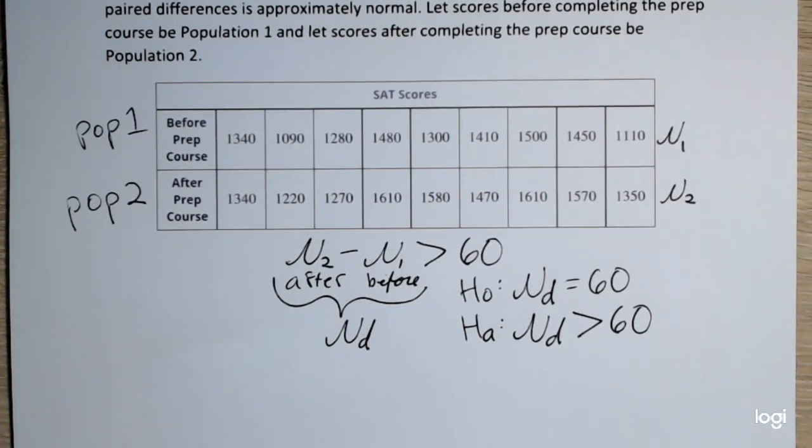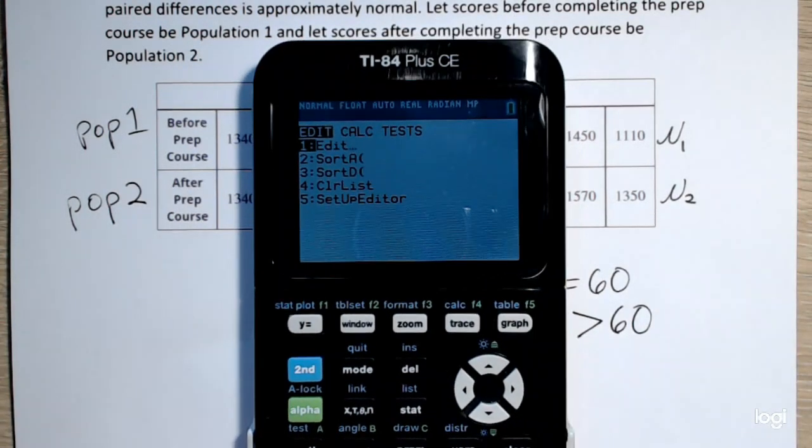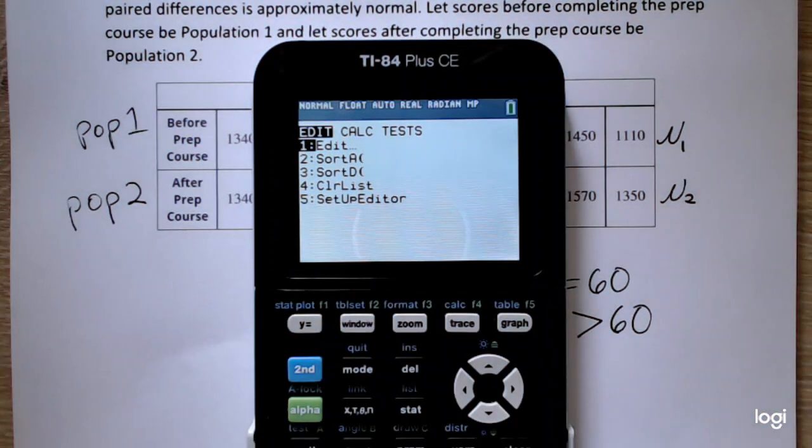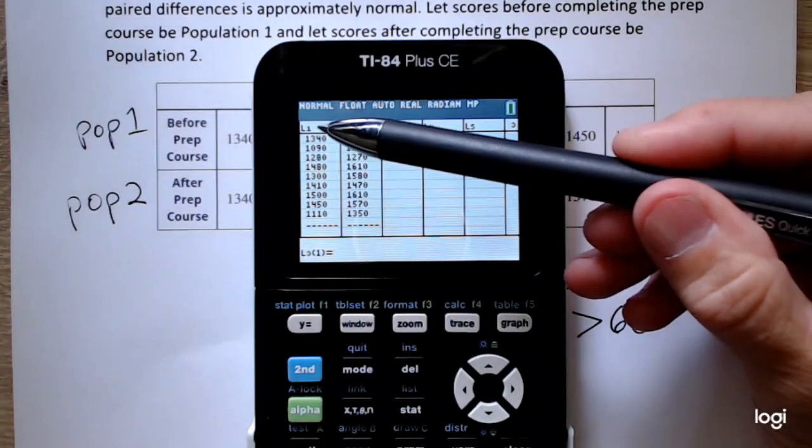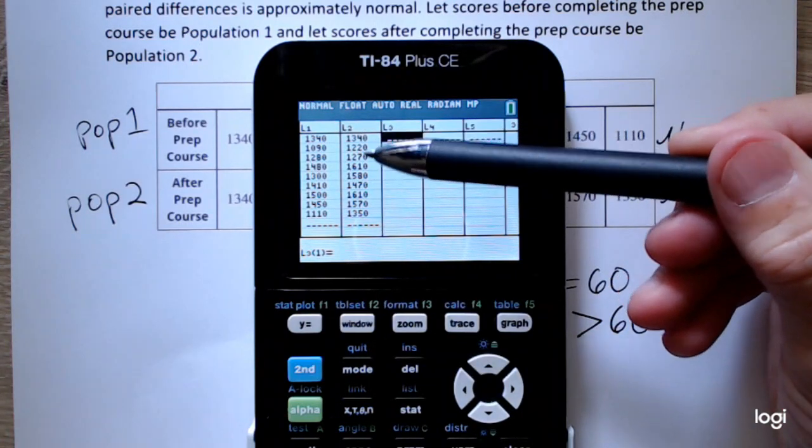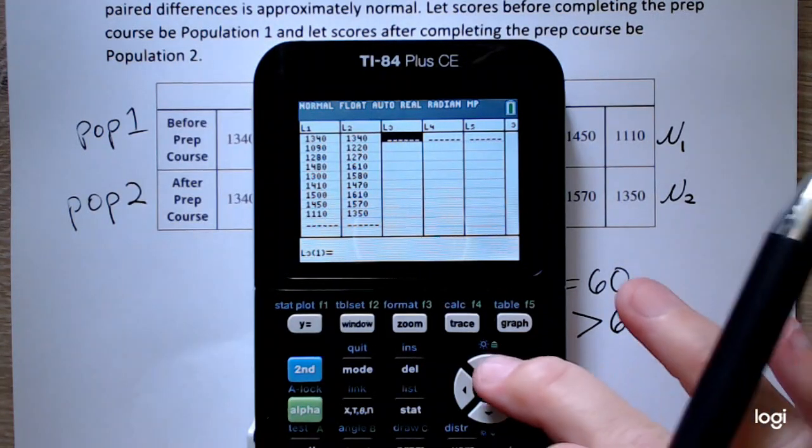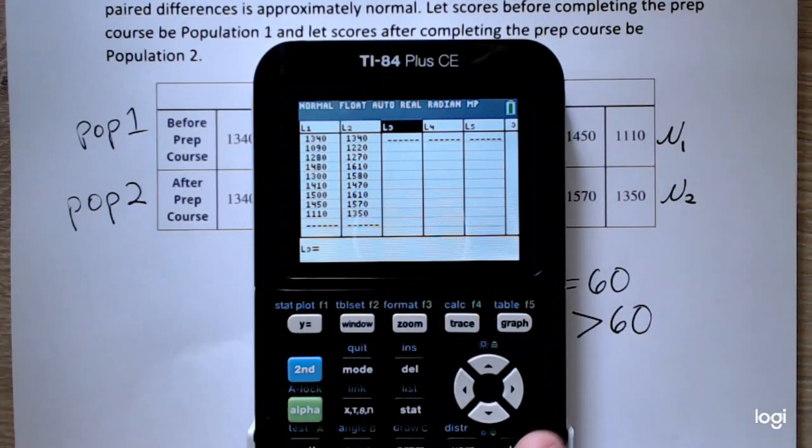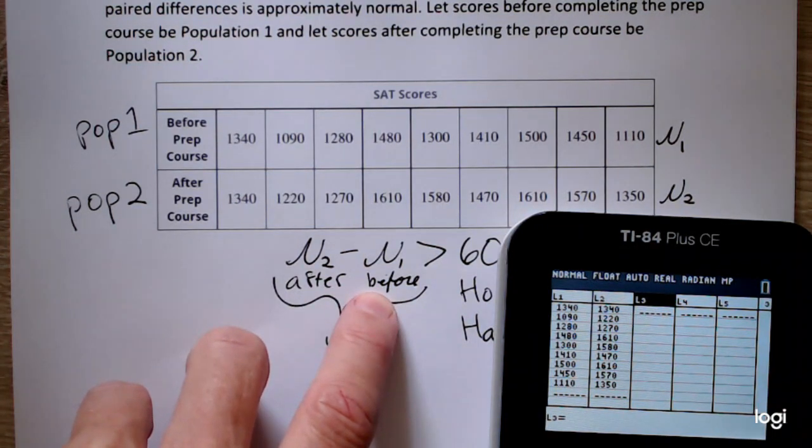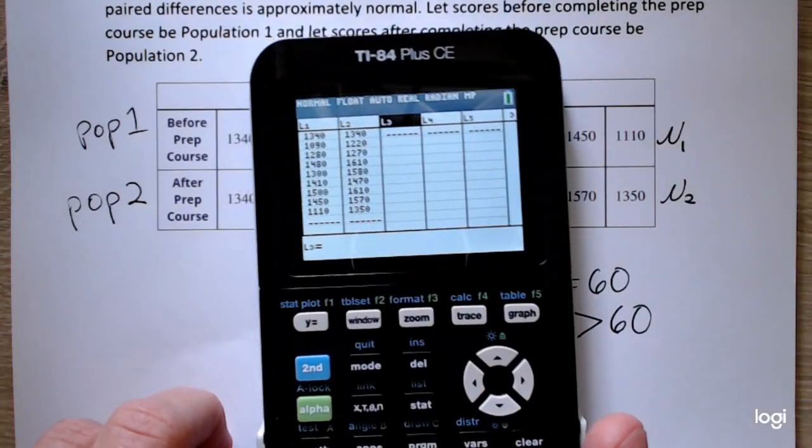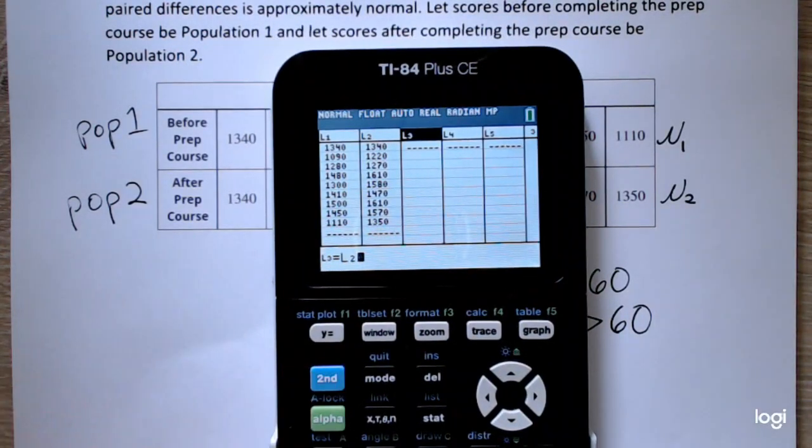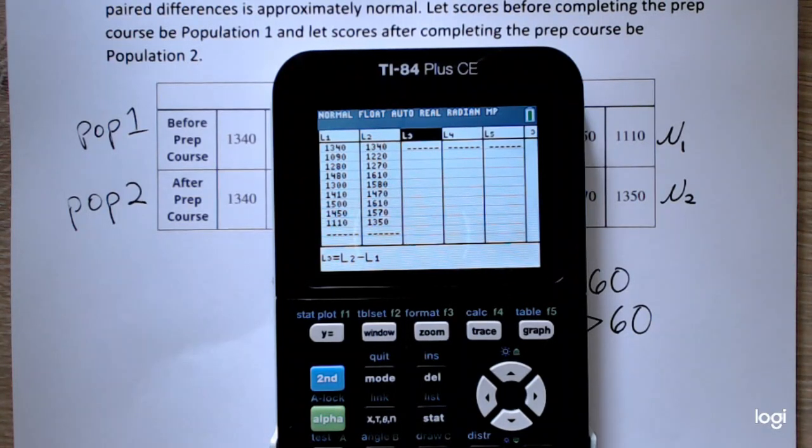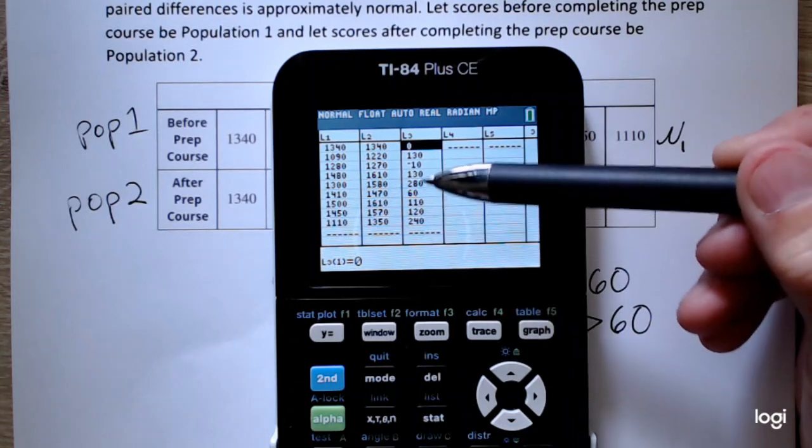So before recording, I went ahead and put the values into my calculator. Going to my edit screen, I have in list 1 my before and in list 2 I have my after. So I can go up to my third list, press enter. I've already decided how I want the subtraction to go. I want the after minus the before. So I'm going to tell the calculator to take all of the values in list 2 and subtract from that all of the values in list 1. So here I have all of my differences.